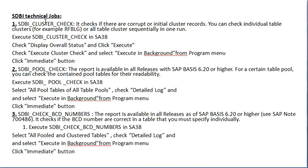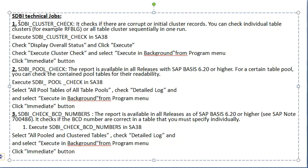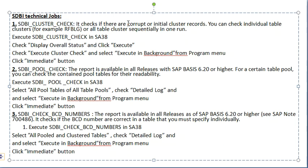Next are the STBI technical jobs. Here we run three jobs. The first is the STBI Cluster Check, which is used to check the data — specifically whether there are any corrupt or initial cluster records. You can check individual table clusters or all table clusters sequentially. This job is run in SA38. Use T-code SA38 and provide the name STBI Cluster Check.